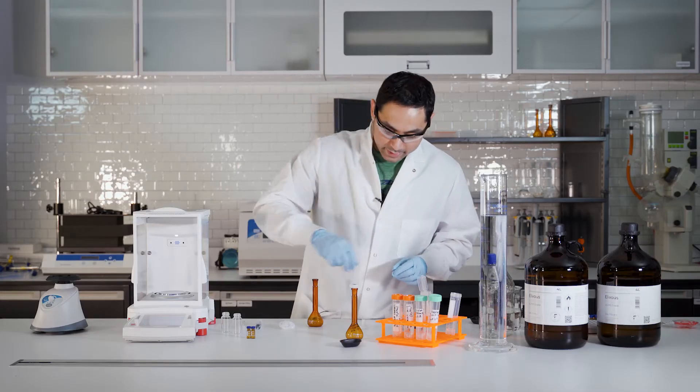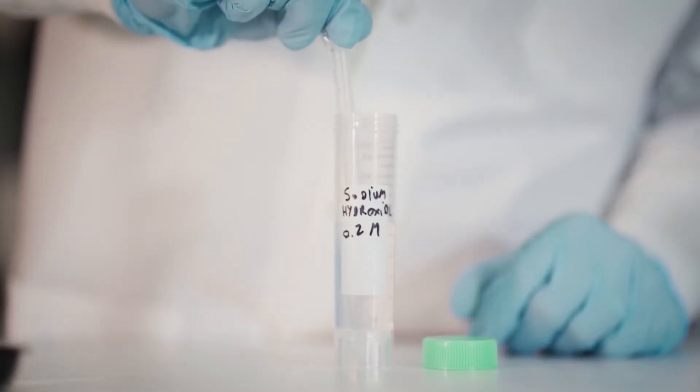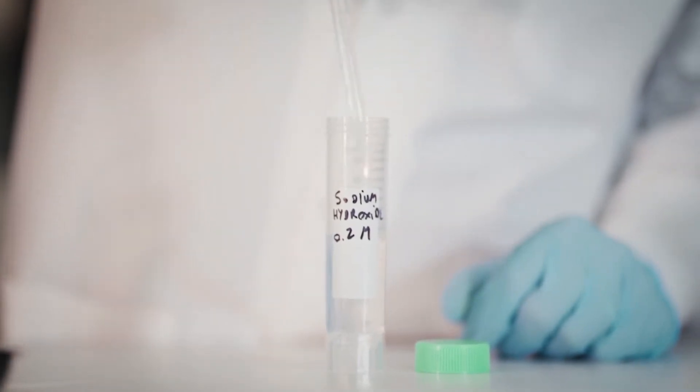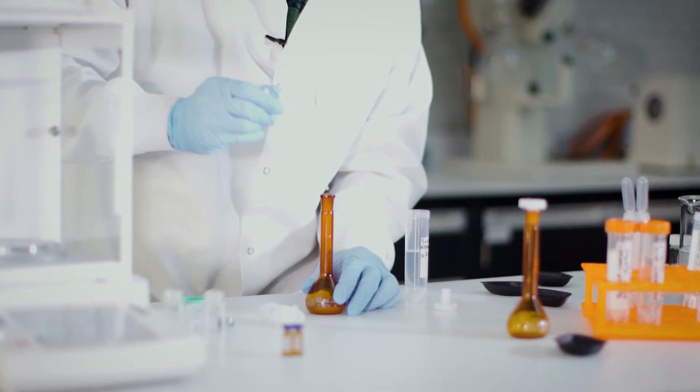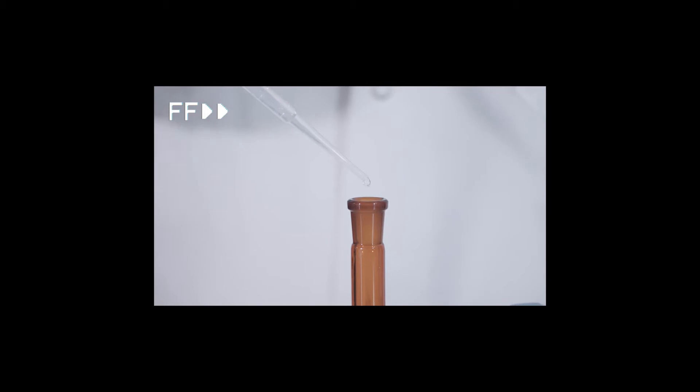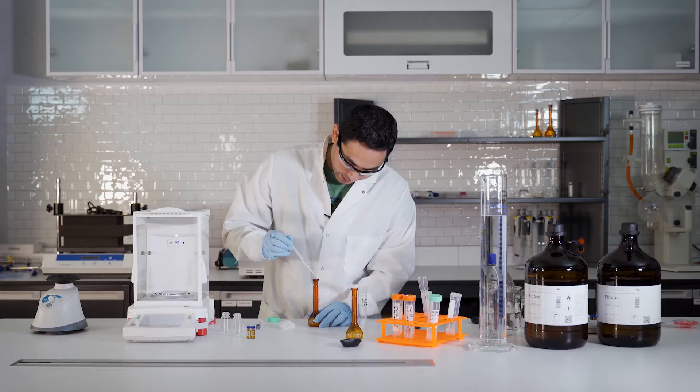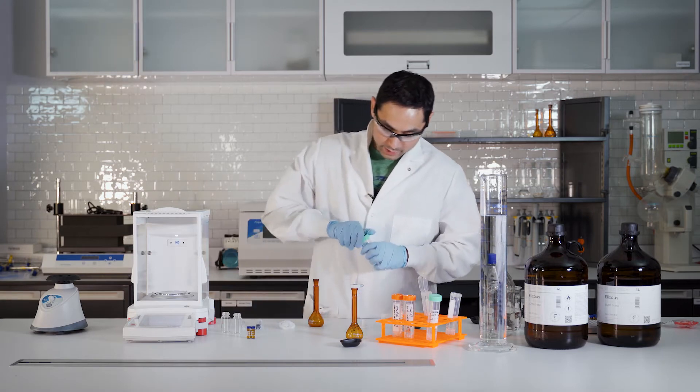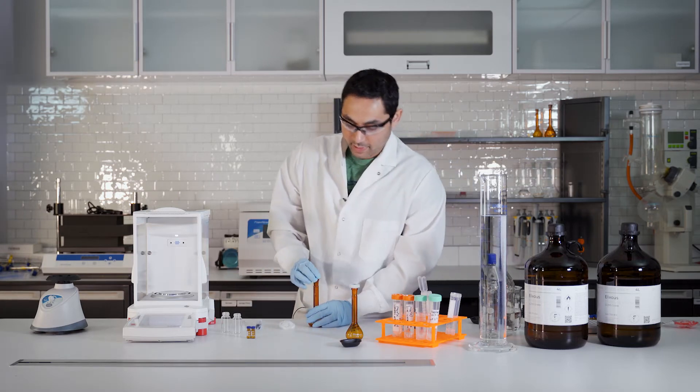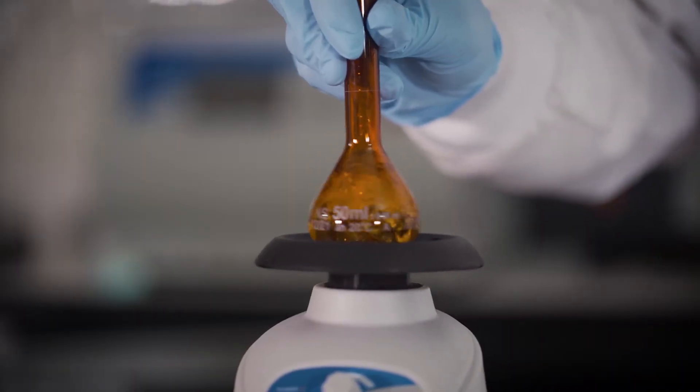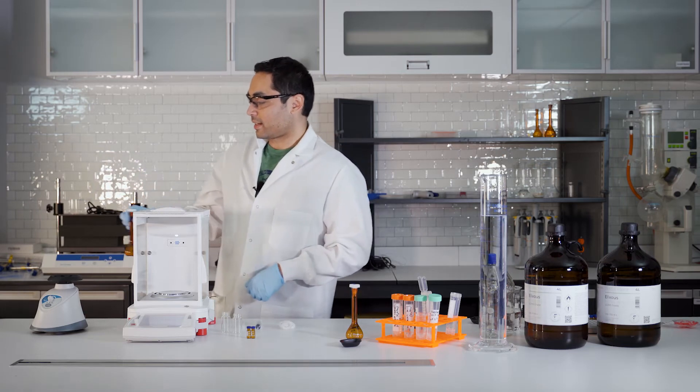And then we want to top it off like halfway before we vortex and sonicate. And then we want to add approximately 20 drops of sodium hydroxide. This is to increase the pH. 1, 2, 3, 4, 5, 6, 7, 8, 9, 10... Okay, 20 drops. Okay, that's done. All right, let's just cap that, and let's vortex and sonicate. And then this will go off into the sonicator.